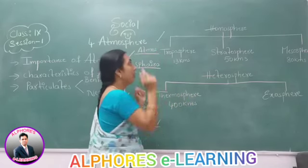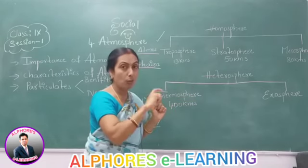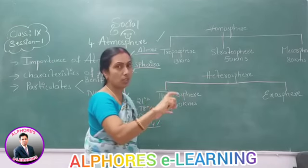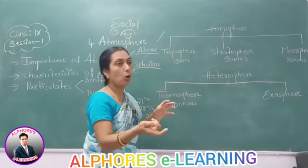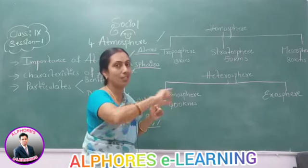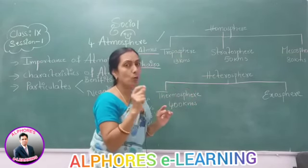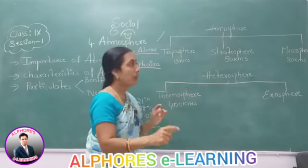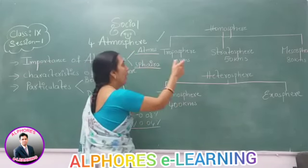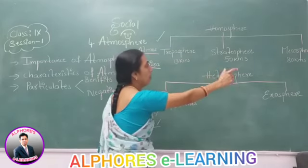Homosphere is named because of the homogeneous nature of that layer — it consists of homogeneous gases like oxygen, nitrogen, argon, and carbon dioxide. That is why it is called homosphere. It extends up to 90 kilometers and is divided into three layers: troposphere, stratosphere, and mesosphere.